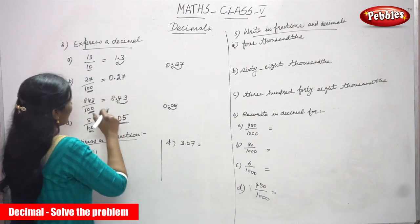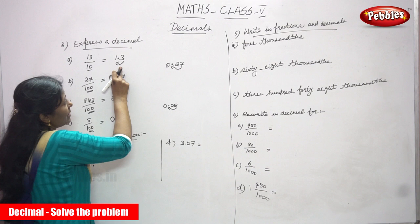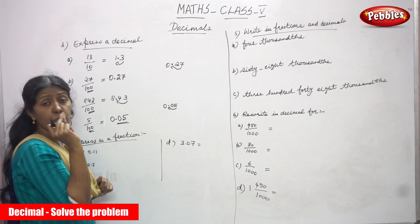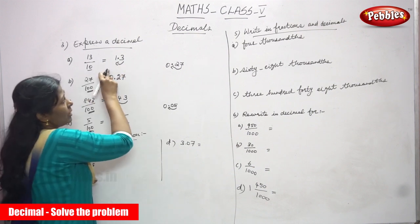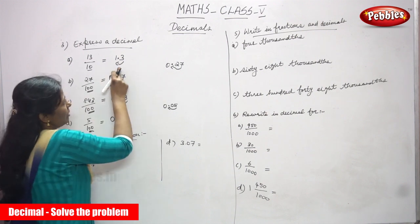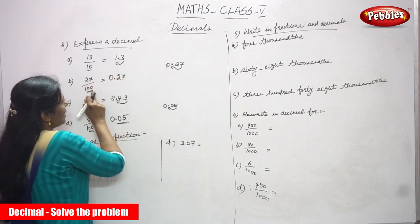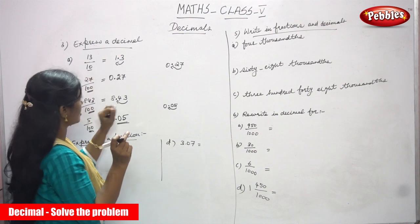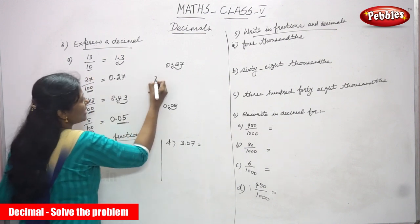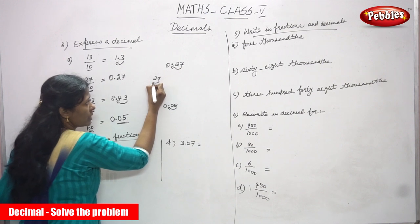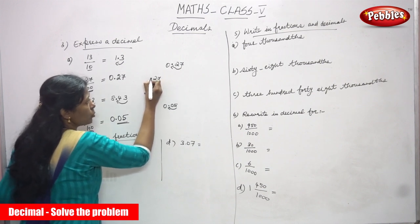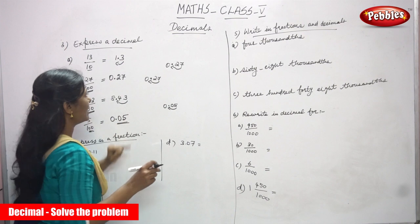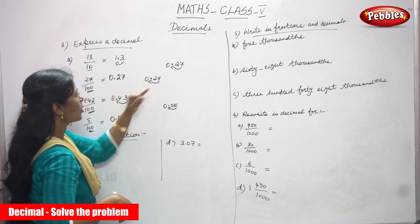Let me repeat once again. 13 by 10: only 1 zero, move only 1 digit from right to left — answer is 1.3. For 27 by 100: 2 zeros, 2 digits in numerator, no problem. Move 2 digits from right to left, put the point, write 7 then 0. The 0 represents the decimal. Answer is 0.27.